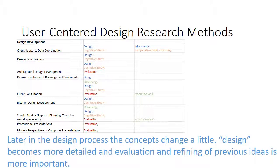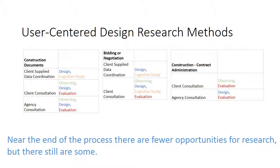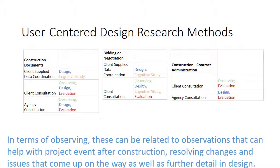Later in the design process the concepts change a little. Design becomes more detailed and evaluation and refining of previous ideas becomes more important. Near the end of the process there are fewer opportunities for research, but there are still some. In terms of observing, these can be related to observations that can help with project events even after construction — resolving changes and issues that come up on the way and further detail in design.